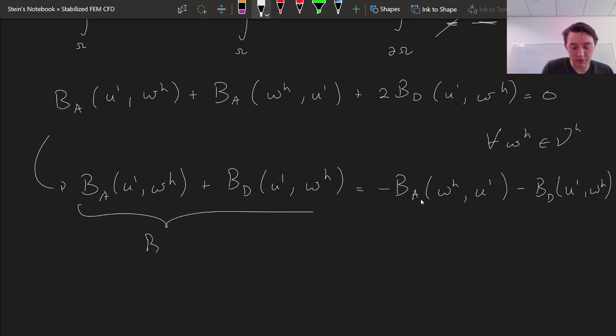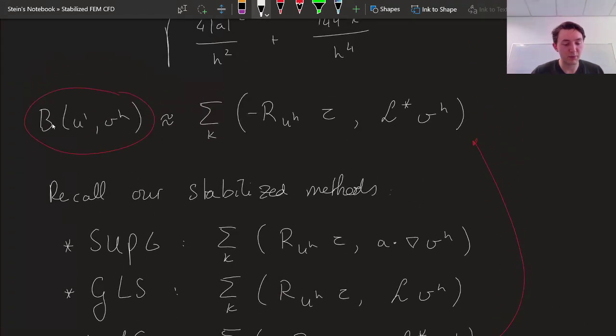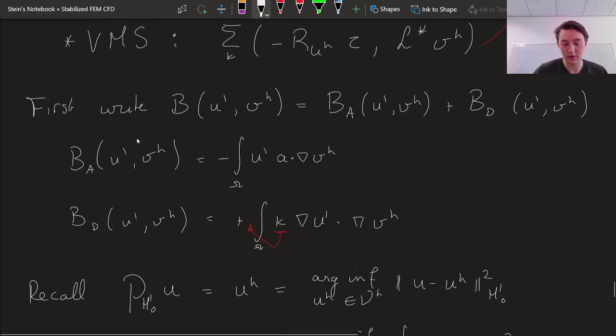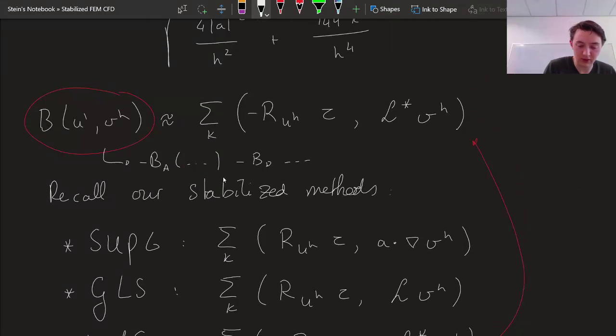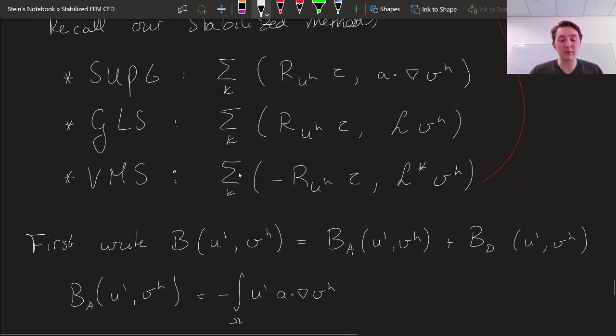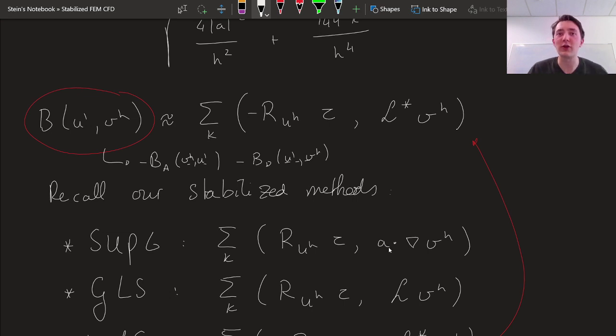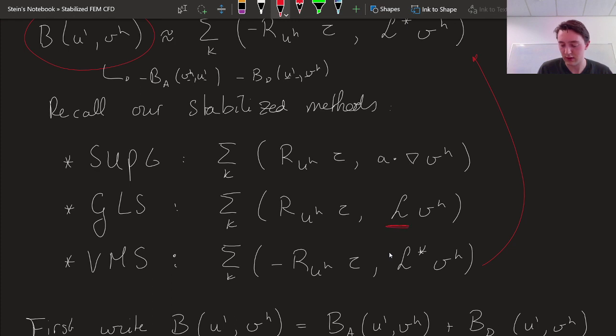Now this was B U' comma W H. And if I now replace B U' comma V H with minus B A minus B D. So that's going to be equal to minus, okay, this is now the adjoint. Sorry. V H comma U' U' comma V H. Then I'm in effect making use of the adjoint already. And then we take the adjoint of the adjoint. And that's how we end up with the original L in here. And that's also how we got rid of the minus, because now we have a bunch of minuses in here.